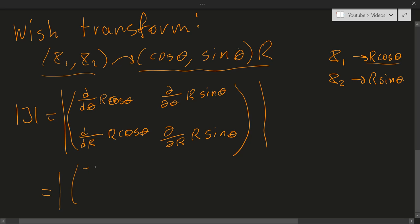minus r sine theta is this, over here we will get r cosine theta, down here we will get cosine theta, and over here we will get sine theta. Okay so far so good, now we take the determinant, so we multiply this entrance with this one and subtract this entrance with this one, and then we take the absolute value.